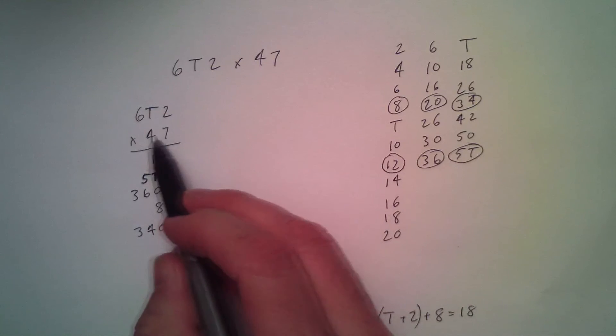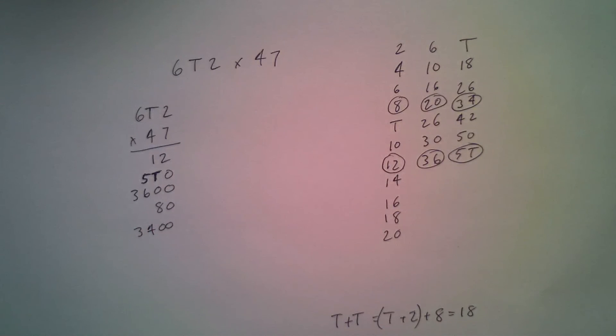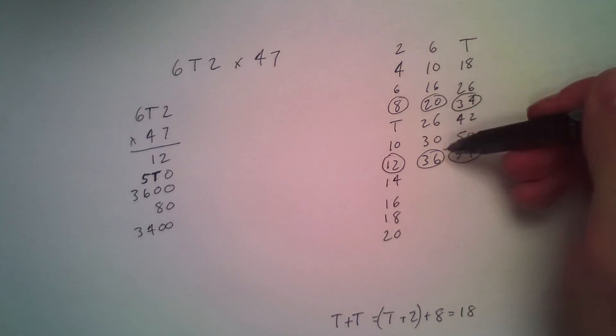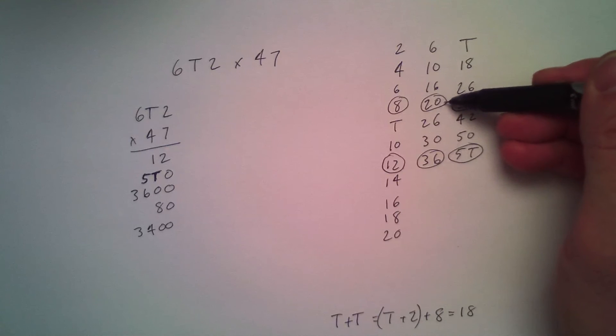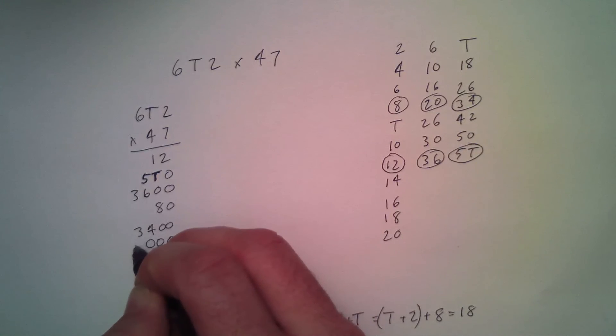And then finally, 4 dozen times 6 gross is 4 times 6 with 1, 2, 3 0s. So 4 times 6 is 2 dozen and 3 0s. So I'm going to write the 0s first just so I don't get confused here. 1, 2, 3 0s and then 2 dozen.